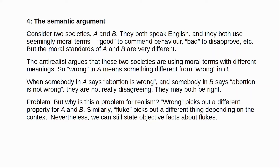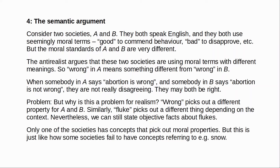Maybe what's going on here is that only one of the societies actually has a term for picking out moral properties. When Society B uses the phrase 'morally wrong,' they're not really referring to moral properties, so members of Society B don't really hold any moral beliefs — at least not until they've become acquainted with moral discourse. But that isn't a challenge to realism. Similarly, there could be a society that had never encountered snow and so has no concept of snow — it doesn't follow from this that there are no facts about snow. So even if it's true that the term 'wrong' has different meanings in each society, it's not clear why that would be a problem for realism.